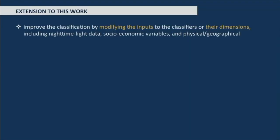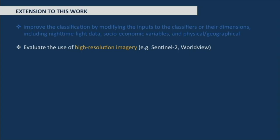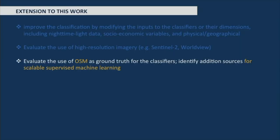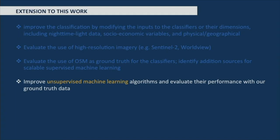Extensions to this work include improving classification by modifying inputs and adding more dimensions — for example, nighttime light features or socioeconomic variables. We are evaluating new high-resolution imagery such as Sentinel-2 and DigitalGlobe's WorldView data, and evaluating the use of OpenStreetMap as ground truth data since it is available at global scales. We also want to improve unsupervised machine learning and integrate ground truth data to further improve classification results.